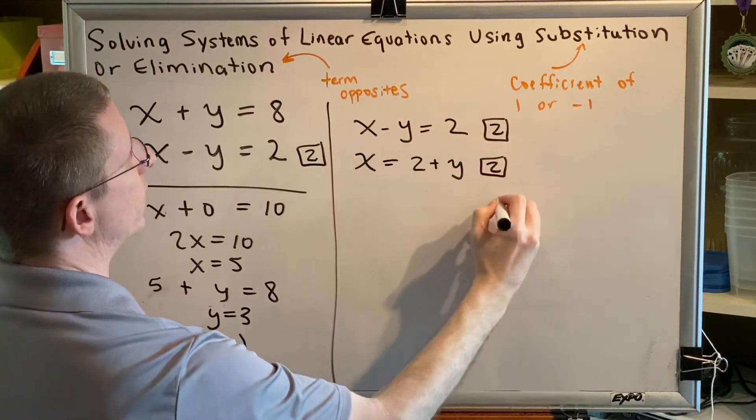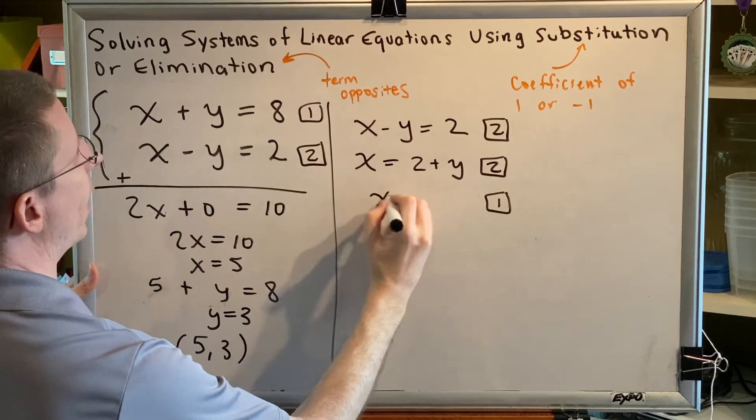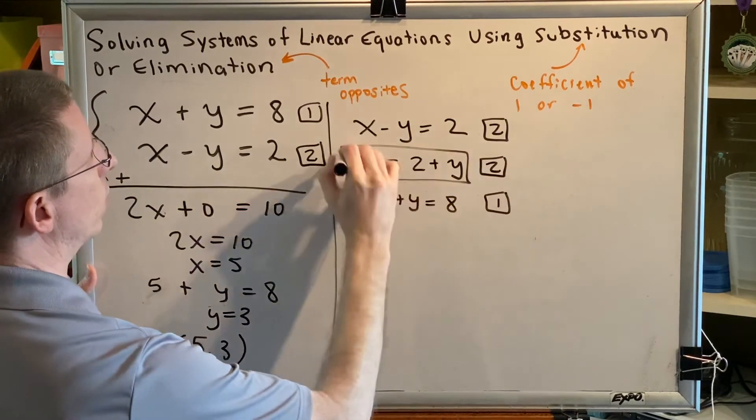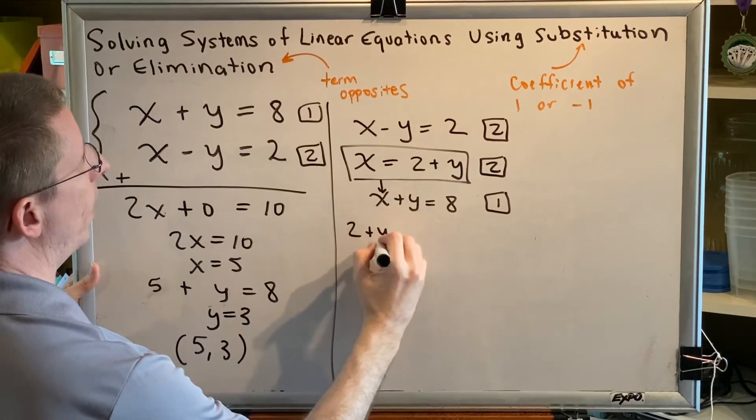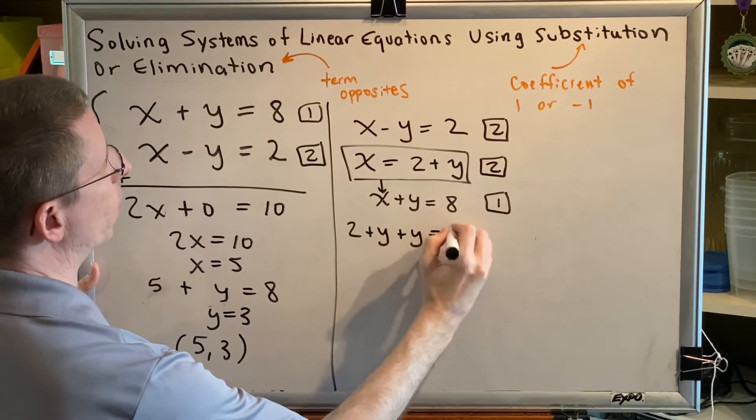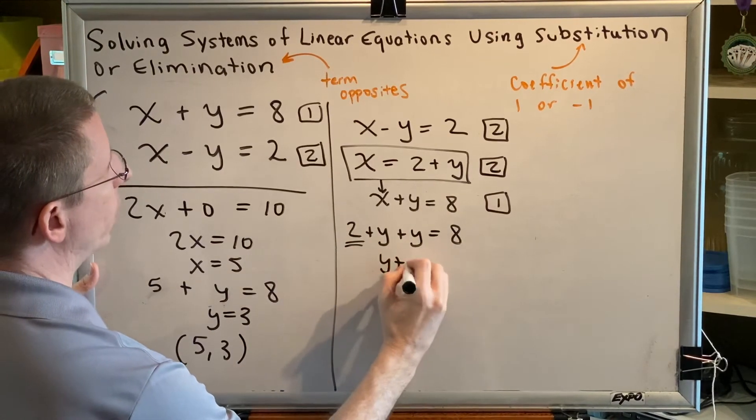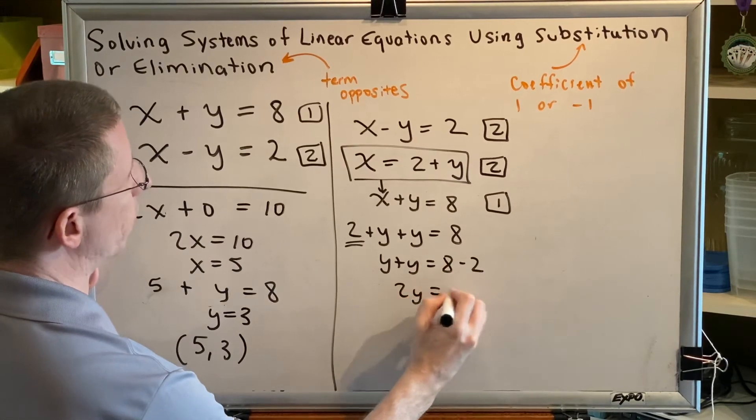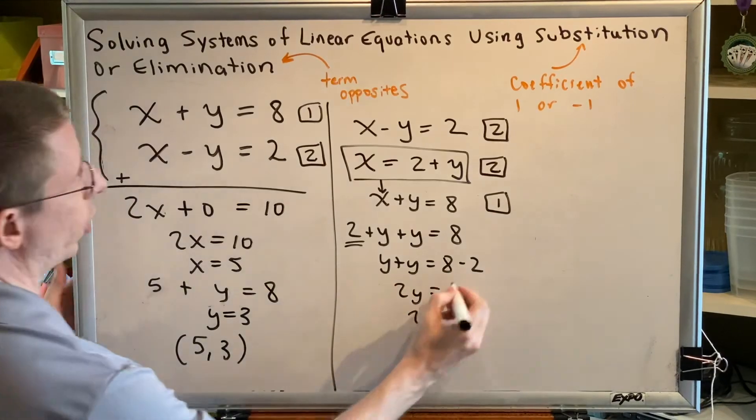So when we substitute, we now substitute into equation 1. Equation 1 said x plus y equals 8. We get 2 plus y plus y equals 8. Moving the 2 to the other side, y plus y equals 8 minus 2. 2y equals 6, y equals 3. So far so good.